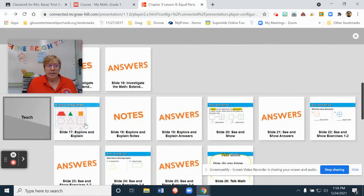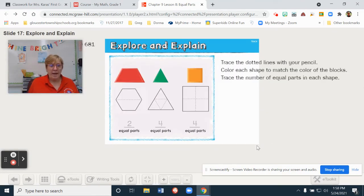So, let's see now. You can turn to page 681 and take out your crayons and your pencil. And if you need to pause this to find that page, do that now. So here, they want us to look at equal parts of these shapes. They're showing a trapezoid and a hexagon. Now, I want you to trace the dots, the dotted lines, with your pencil.